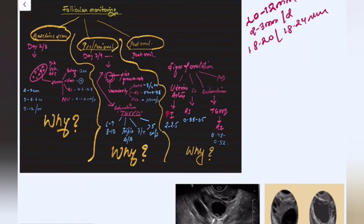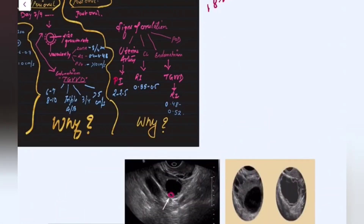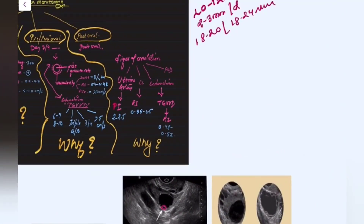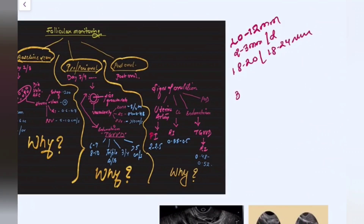The cumulus oophorus is the internal bleb-like structure seen in the dominant follicle. It appears approximately 36 hours before ovulation. The sonolucent halo appears around 24 hours before ovulation, and there is separation and in-folding of the inner layers approximately 6 to 10 hours before ovulation.